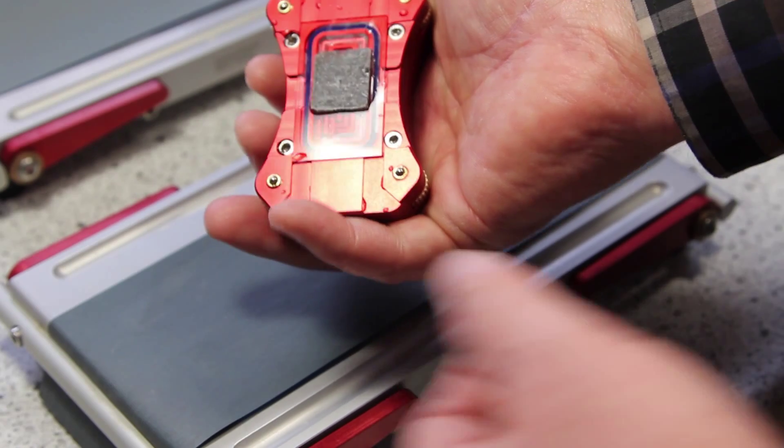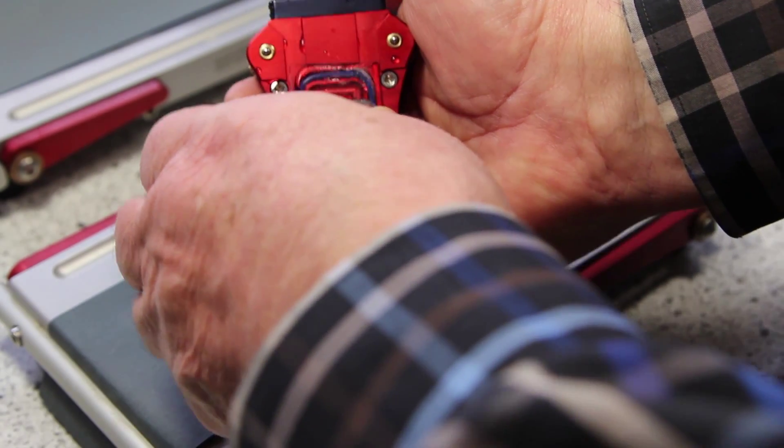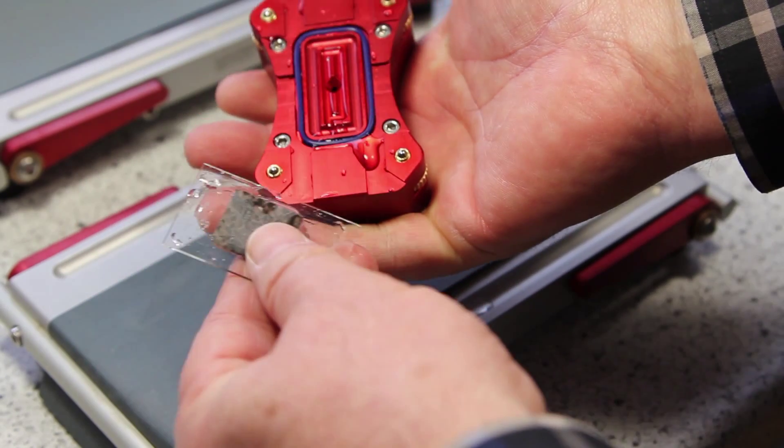And now I press the button and I take the sample out of the thin section mount.